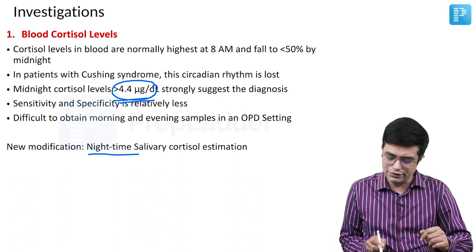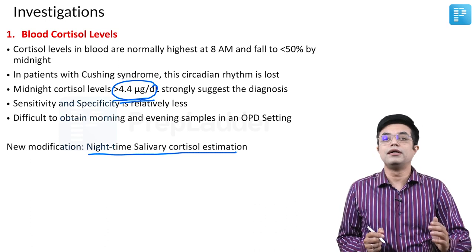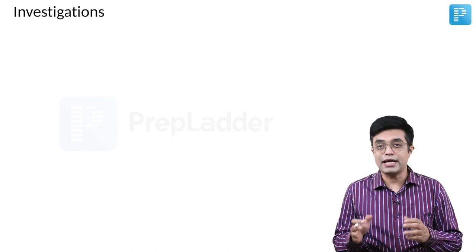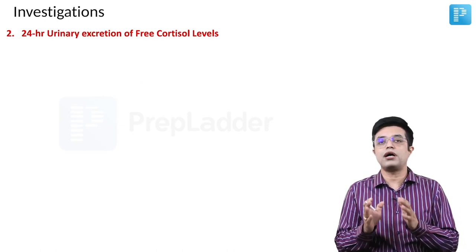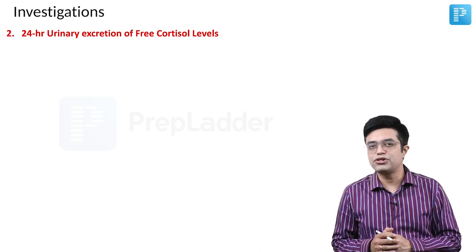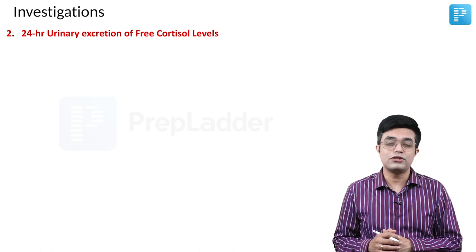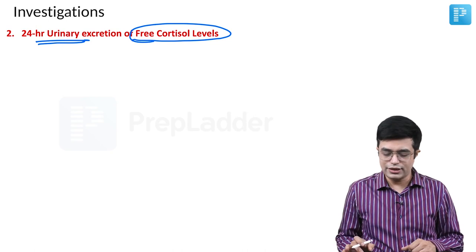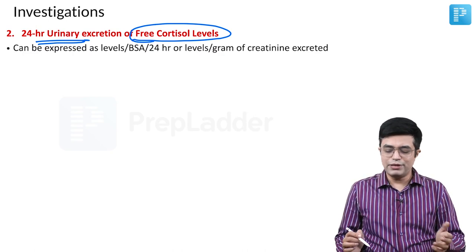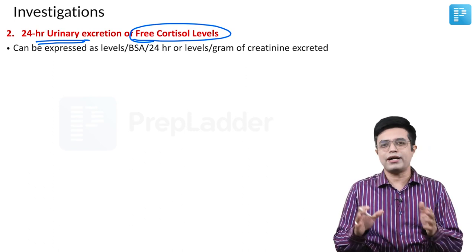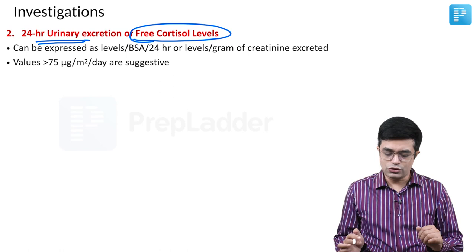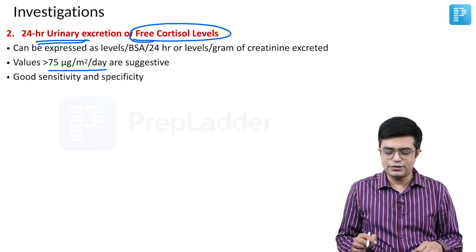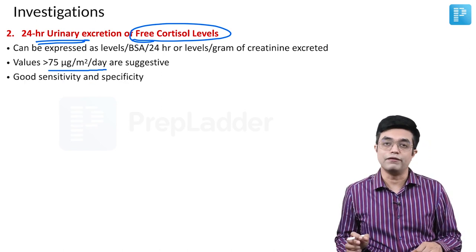Nighttime salivary cortisol estimation is also coming into use, though cutoffs are not yet standardized outside tertiary care centers. The second screening investigation is 24-hour urinary excretion of free cortisol. If values are more than 75 mcg/m² body surface area per day, it is suggestive, and this test has better sensitivity and specificity compared to blood cortisol levels alone.